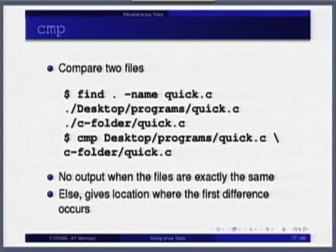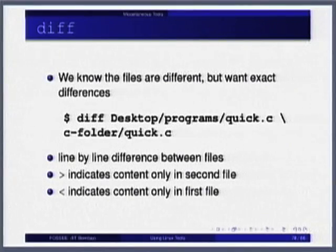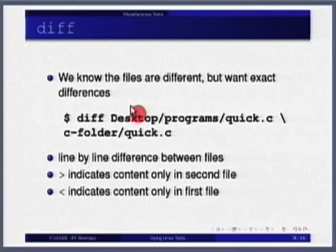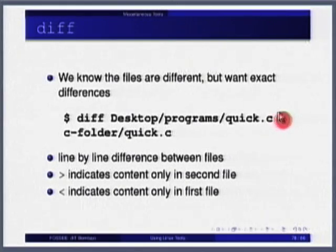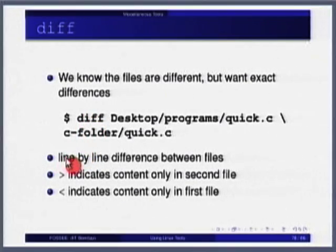With `diff`, `>` denotes lines from the right-side file and `<` denotes lines from the left-side file. Lines that are the same in both files are not shown. `diff` is smart enough to know if a line is shifted further down — it will not get confused and will still match it correctly.